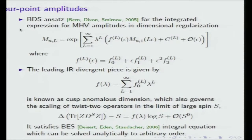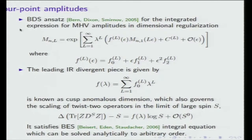The BDS ansatz: for a number of particles greater than five there is a correction called the remainder function, but for four-point amplitudes it is perfectly valid and shows that the L-loop amplitude is an exponential of the one-loop amplitude times some unknown functions of coupling. One of these unknown functions, known as the cusp anomalous dimension gamma_cusp, appears in totally different contexts in integrability. It was calculated by Beisert, Eden, and Staudacher in 2006 via an integral equation solvable order by order, giving an explicit all-order solution — the BES equation.